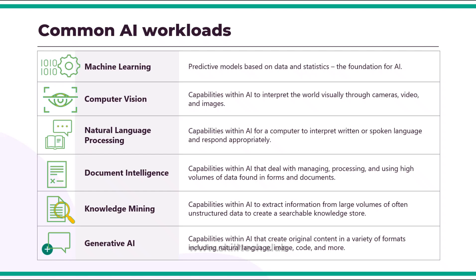The fourth workload is document intelligence, which helps you manage manual documents — physical documents, books, and other formats. This high volume of data in the form of forms and documents can be processed using document intelligence in much shorter time and with precision. Then we have knowledge mining, where AI helps you extract information from large volumes of data — most often unstructured data — to create a searchable knowledge store, similar to creating a search index.